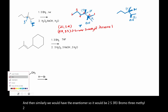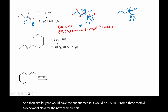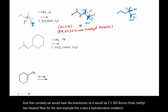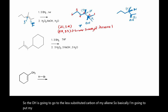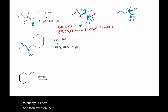Now for the next example, this is also a hydroboration oxidation reaction. So the OH is going to go to the less substituted carbon of my alkene. So basically I'm going to put my OH here, and then my bromine is going to go here. It is an anti-arrangement like this.